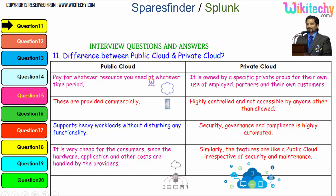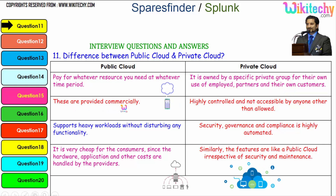Public cloud is like viewing a film in a cinema theatre, whereas viewing a film at home using a DVD is your private cloud. With public cloud, you pay for whatever resource you need at whatever time period. It is owned by a specific private group for the use of employed partners and their own customers. These are provided commercially, and it is highly controlled and not accessible to anyone other than those allowed. It supports heavy workloads without disturbing any functionality. Security, governance, and compliance are highly automated. It is very cheap for consumers since hardware, application, and other costs are handled by the providers.